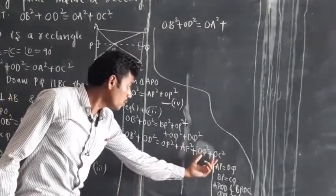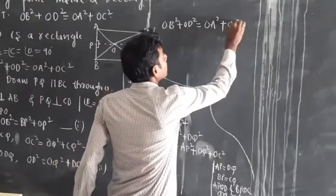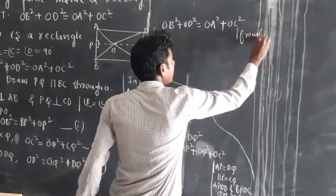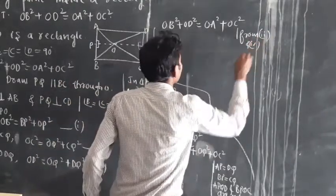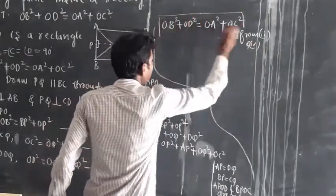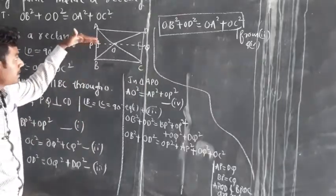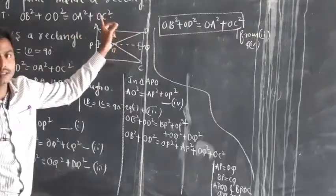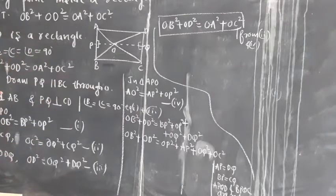OQ square plus QC square is OC square, and OP square plus AP square is OA square. So OB square plus OD square equals OA square plus OC square — this is from equations 2 and 4. The construction of parallel line PQ and the partition into rectangles is the key idea in this solution. Please note this.